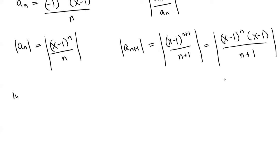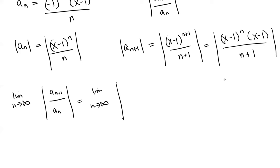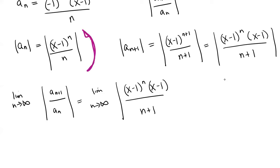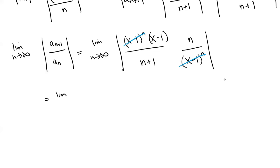Now we are ready to use the ratio test. For the ratio test, we're looking at the limit as n goes to infinity of the absolute value of a_{n+1} over a_n. So this is the limit as n goes to infinity of (x minus 1) to the n times (x minus 1), over n plus 1, multiplied by n over (x minus 1) to the n. We can see that the (x minus 1) to the n terms cancel out, and that leaves us with the limit as n goes to infinity of the absolute value of (x minus 1) times n over n plus 1.